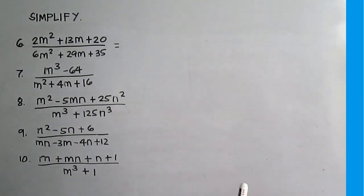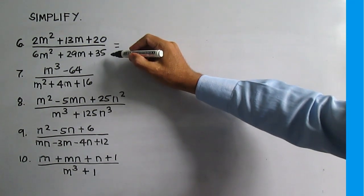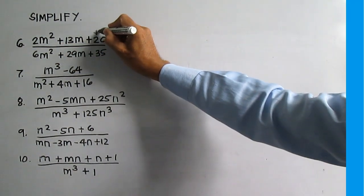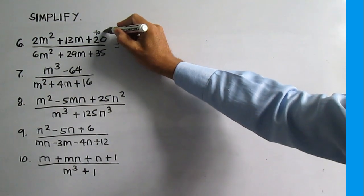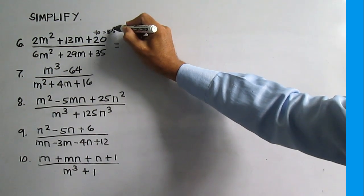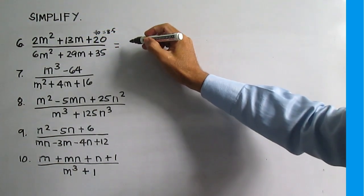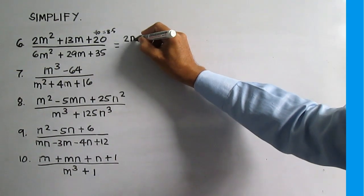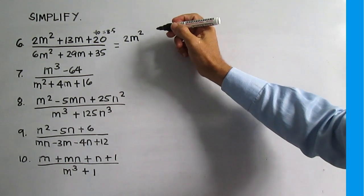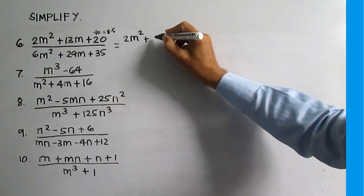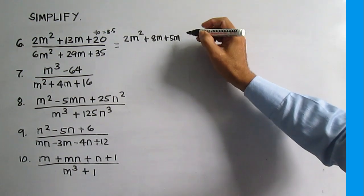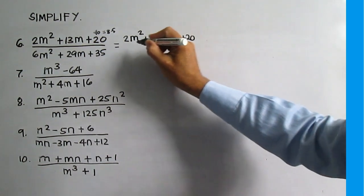Number 6. 2M squared plus 13M plus 20 is a general trinomial. Using the AC method, 2 times 20 is 40. Think of two numbers that give a product of 40 and a sum of 13: 8 and 5. Write 13M as 8M plus 5M, giving 2M squared plus 8M plus 5M plus 20 all over the denominator.